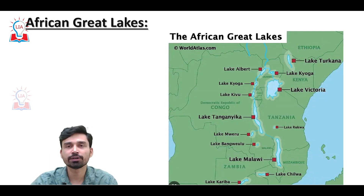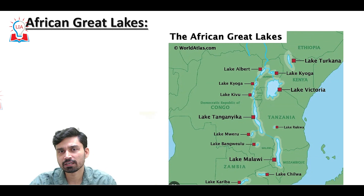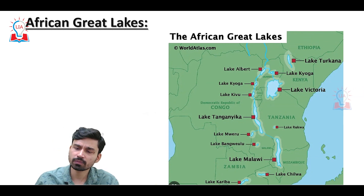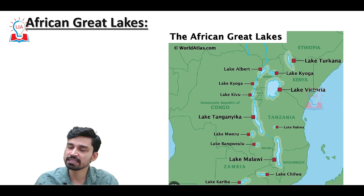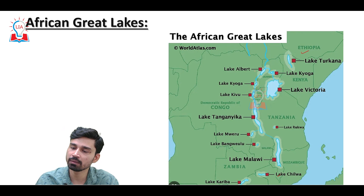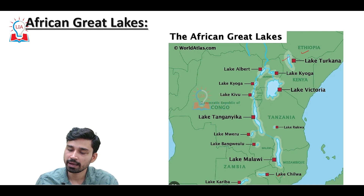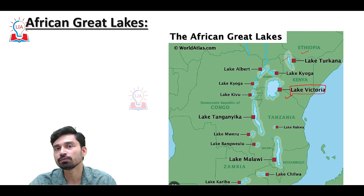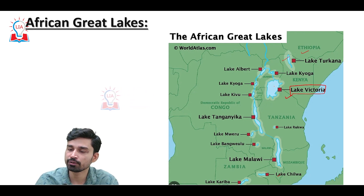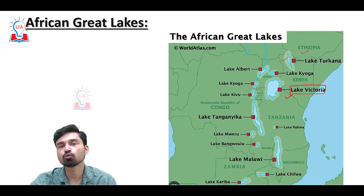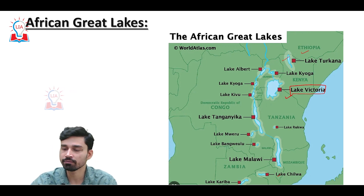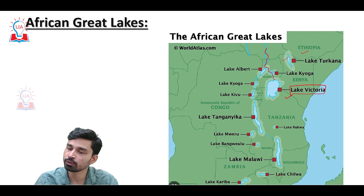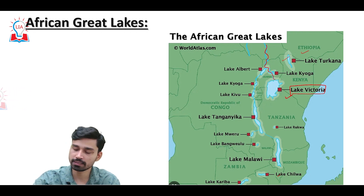The next important physiographical feature is the Great Lakes of Africa, also called the African Great Lakes. They straddle the eastern coast of Africa from Ethiopia in the north to Zambia and Mozambique in the south, and are made up of nine major lakes: Lake Turkana, Lake Albert, Lake Kyoga, Lake Kivu, Tanganyika, Malawi, and Lake Chilwa. The largest is Lake Victoria, straddling the borders of Kenya, Uganda, and Tanzania. Lake Victoria is also the source of the Nile River, which flows through Uganda northward to Egypt, draining into the Mediterranean Sea.